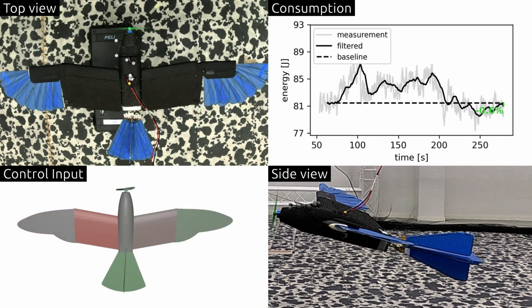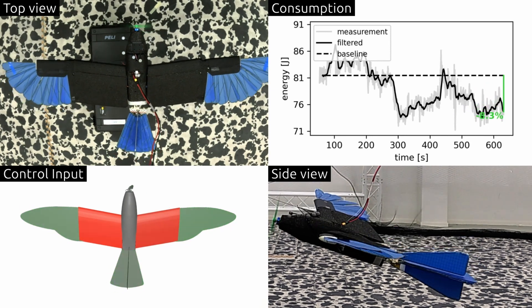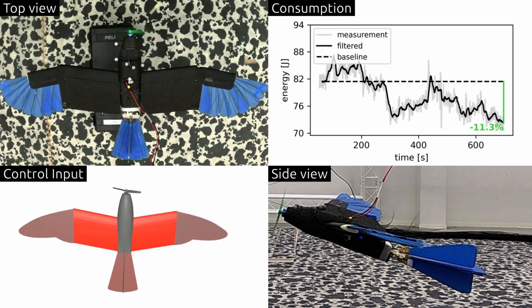Using Bayesian optimization onboard, the drone learns the configuration that consumes the least amount of power, increasing energy efficiency up to 11.5%.